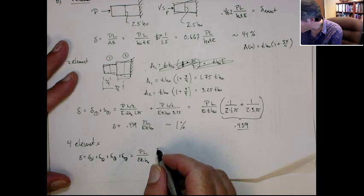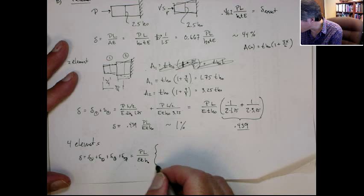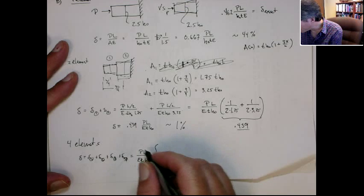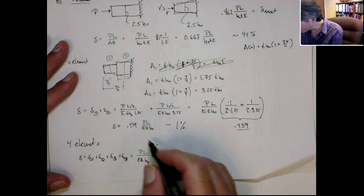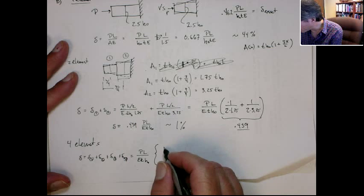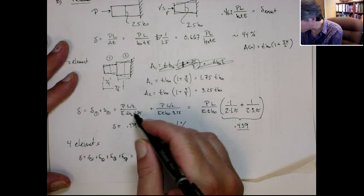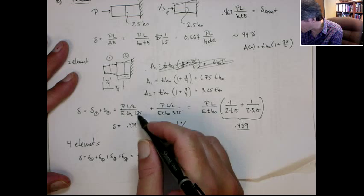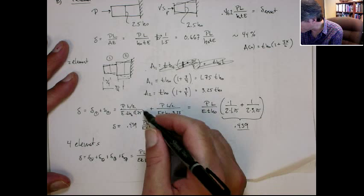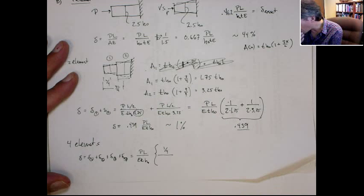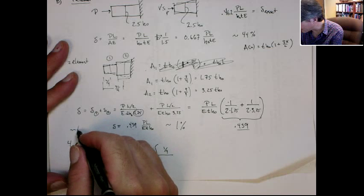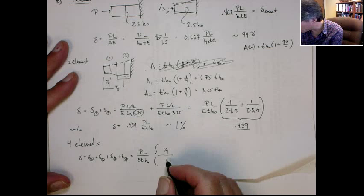And then the difference for each one is going to be, each element here is going to have a one quarter. That's because the actual length is one quarter as opposed to one half. And then on the bottom, you're going to have this factor times H naught because the area is actually something times H naught.